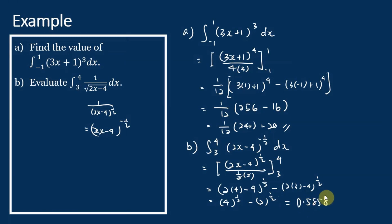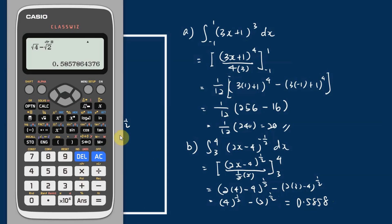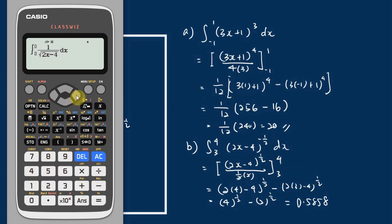The answer is 0.5858. Let's use the calculator to verify. We press the integration button and key in 1 over the square root of (2x minus 4), then integrate from 3 to 4 and press equals. The answer is confirmed as 0.5858, so the answer is correct. That's how we use the Casio FX570EX calculators to find the answer for definite integration.